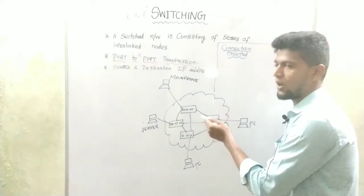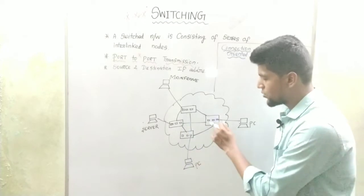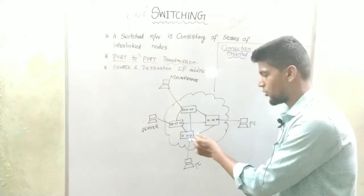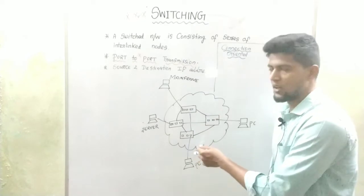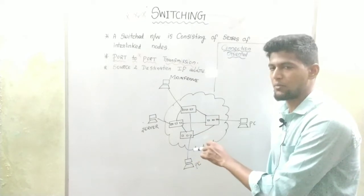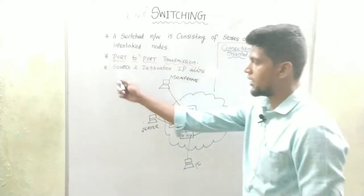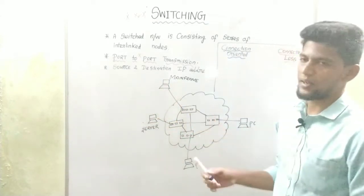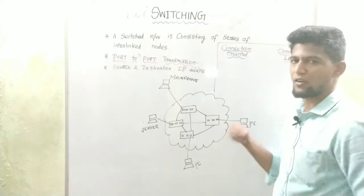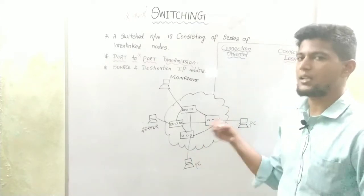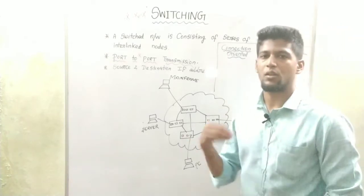Once you switch to an IP address, we have a switch. You can access the IP address and the receiver IP address. This is the dynamic network.